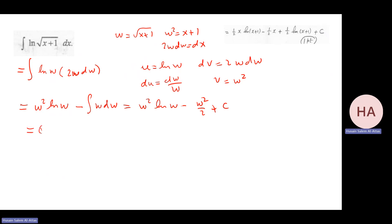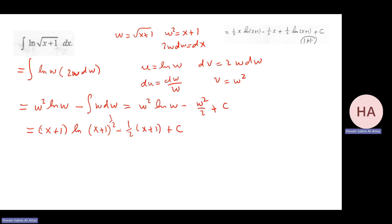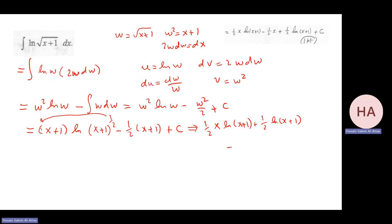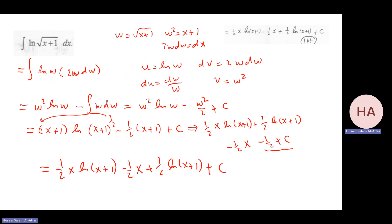Substituting back w = √(x+1), so w² = x+1: the result is (x+1) ln(√(x+1)) - (x+1)/2 + C. Since ln(√(x+1)) = (1/2)ln(x+1), this expands to (1/2)(x+1)ln(x+1) - (x+1)/2 + C, which simplifies to (1/2)x·ln(x+1) + (1/2)ln(x+1) - (1/2)x + C.